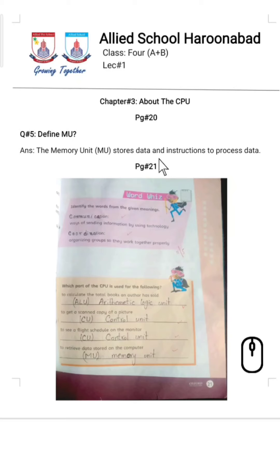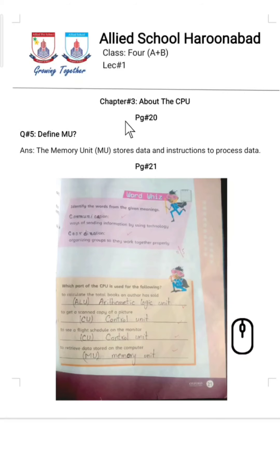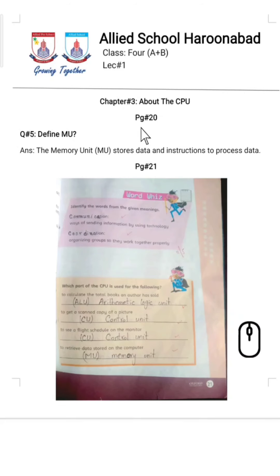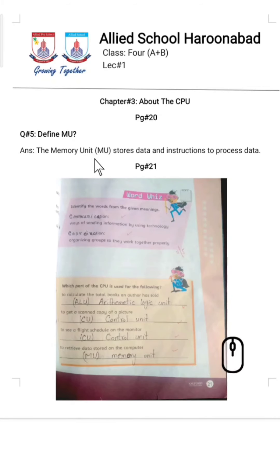The three parts of the CPU are: first, ALU — Arithmetic Logic Unit; second, CU — Control Unit; and third, MU — Memory Unit. So far in this chapter we have covered four questions and studied ALU and CU in detail. Today we will discuss question number 5, which is on page 20 of your book. The question is: define MU.